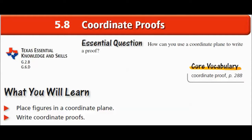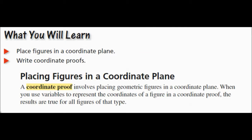Section 5.8: Coordinate Proofs. We're going to talk about what coordinate proofs are and how to write them. We also want to be able to place figures in a coordinate plane — on the graph in the best way to make it easy on us. A coordinate proof simply involves placing a geometric figure in a coordinate plane and using variables to represent the coordinates, because we're talking in general terms about what's happening to a shape.